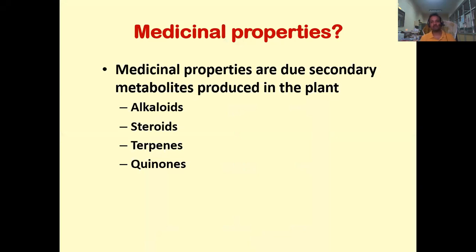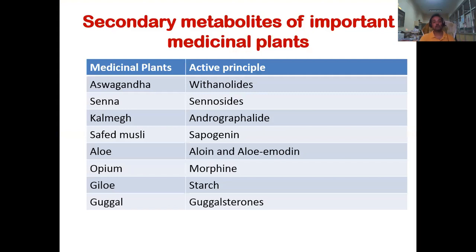Why do these plants have medicinal properties? The major reason is that these plants produce special kinds of molecules called secondary metabolites, which are produced in specific groups of plants and hence give them medicinal properties. Primary metabolites include carbohydrates, proteins and amino acids, while secondary metabolites include alkaloids, steroids, terpenoids and phenolics.